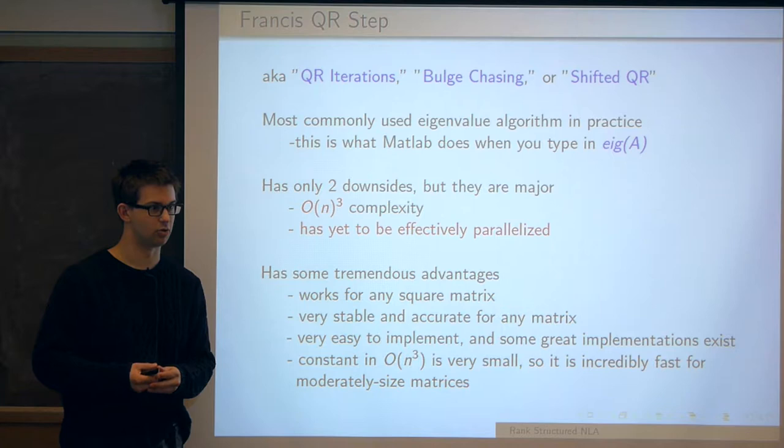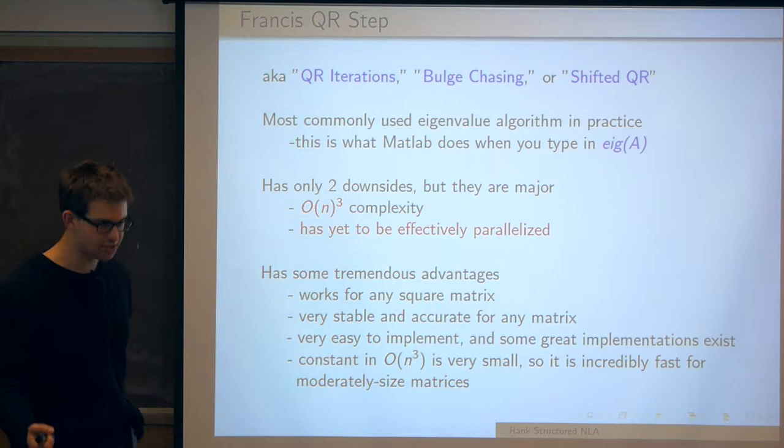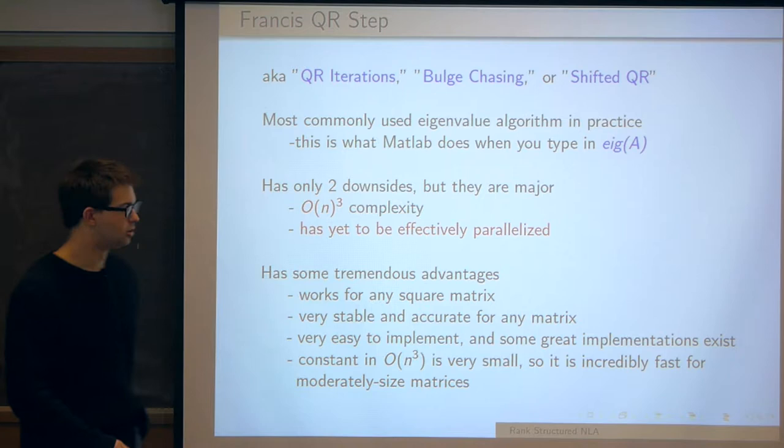It's important to know how it works. Its advantages are that it works for any square matrix — doesn't have to be real, symmetric, or have any nice eigenvalue properties. It's very stable and easy to implement. Some of the HSS solvers I'll show you can be well over a thousand lines in MATLAB, whereas you can implement a good shifted QR in about 50 lines.